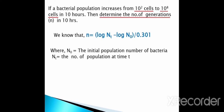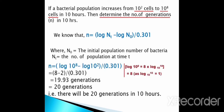We have to determine the number of generations in 10 hours. N = (log 10^8 − log 10^2) / 0.301. Log 10^8 = 8 × log 10 = 8, and log 10^2 = 2. So N = (8 − 2) / 0.301 = 6 / 0.301 = 20 generations. There will be 20 generations in 10 hours.